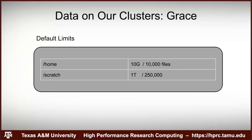We never increase your home directory — it's always 10 GB or 10,000 files — because we back up home directories nightly. With thousands of users, increasing home quotas would make that backup absurdly large very quickly. We will always limit the home to 10 GB and 10,000 files; we've never made an exception to that.